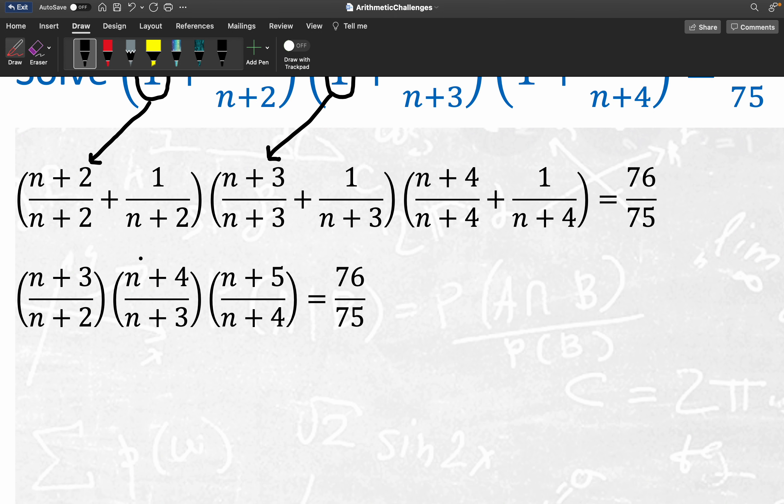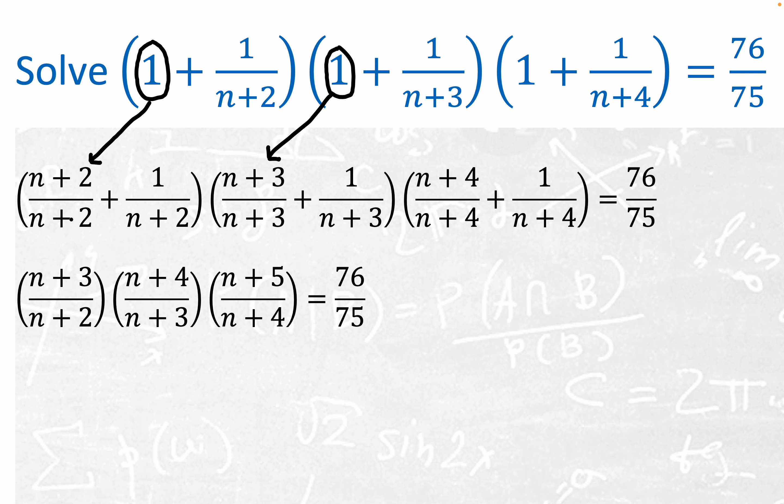Now what's the motivation there? The motivation is that we have a built-in common denominator here. And then what we can do is notice that once we have the n plus 2, we can just add the two numerators to get n plus 3, and the same thing all the way across.